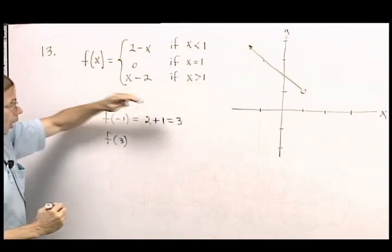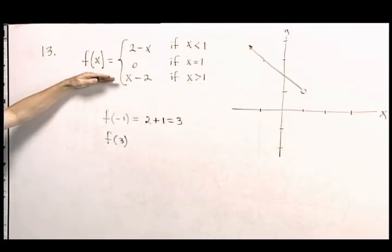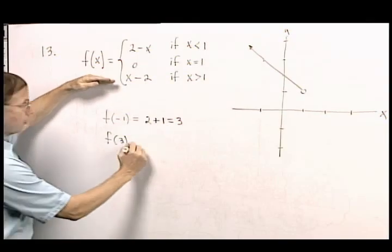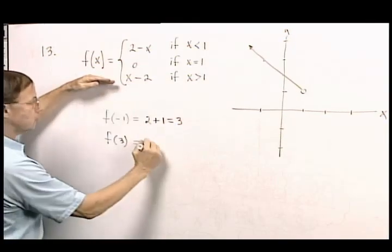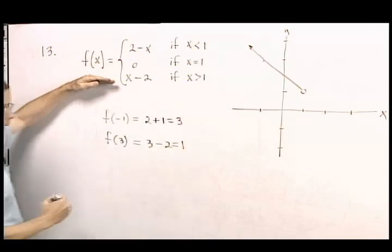Notice 3 is bigger than 1, so I should be using this expression. So f of 3 will be x, which is 3, minus 2, which is 1.